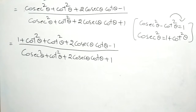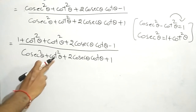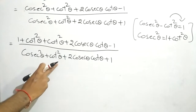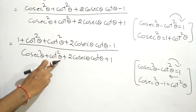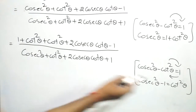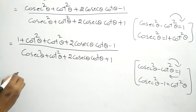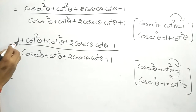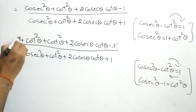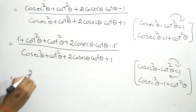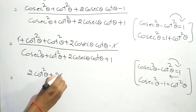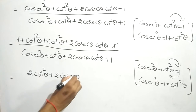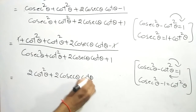Now we are changing the denominator. In place of cot²θ we are writing cosec²θ - 1. In the numerator, +1 and -1 cancel. So cot²θ + cot²θ becomes 2cot²θ, giving us 2cot²θ + 2cosecθ·cotθ in the numerator.